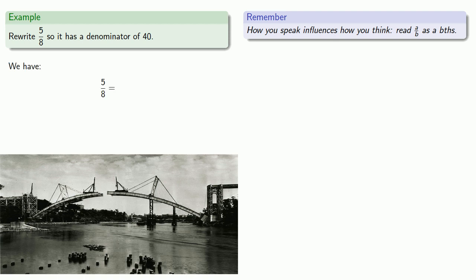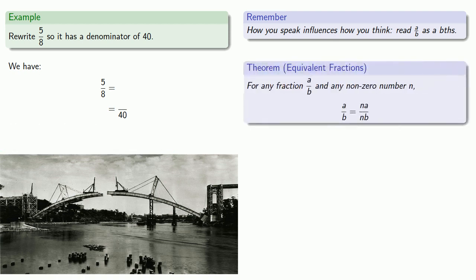So we have 5 eighths, and what we'd like to end with is a fraction with a denominator of 40. Our equivalent fractions theorem tells us that we can produce an equivalent fraction by multiplying numerator and denominator by the same non-zero number. So 5 eighths will be equal to a fraction that's 5 times something over 8 times the same thing. And so the question you've got to ask yourself is, self, what do I multiply 8 by to get 40?